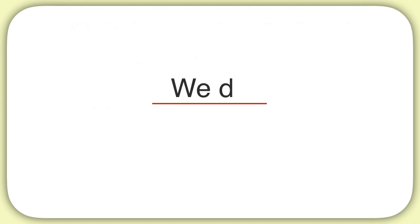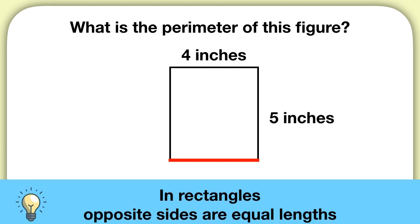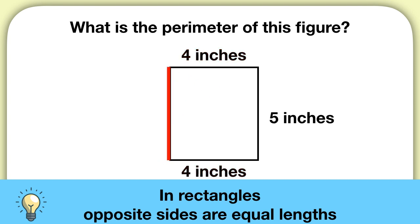Now let's practice one of these together. What is the perimeter of this figure? Let's start — what is the length of this side? Remember that in rectangles, opposite sides are equal lengths. So because this side is 4 inches, we can tell this side is 4 inches. What is the length of this side? Again, opposite sides are equal. So because this is 5 inches, we know this side is 5 inches.